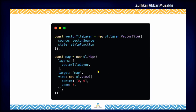After we get the source, we create the vector tile layer. We provide the source and the style function — the style function is the same as before, we don't change it at all. Finally, we add the vector tile layer to the map.